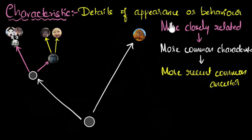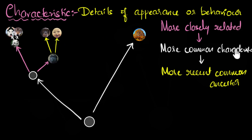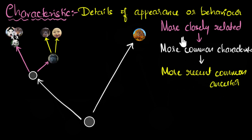Long story short, classification is about how closely related two organisms are. More closely related means more common characteristics, and more common characteristics means more recent common ancestor. That's how classification and evolution are linked with each other.